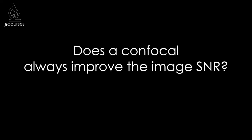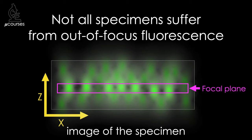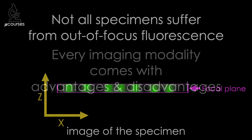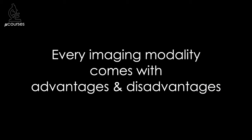But does a confocal microscope always improve the image signal-to-noise ratio? I'm afraid it's not that simple. The major advantage of confocal is reduction of out-of-focus fluorescence. If your images aren't degraded by out-of-focus fluorescence — because there's no fluorophore outside the focal plane or your specimen is thin — you won't see that advantage. The unfortunate reality is that every imaging modality comes with both advantages and disadvantages, so if you aren't getting the advantages, you're only getting the disadvantages. Navigating the advantages and disadvantages of confocal will be covered in another microcourse.